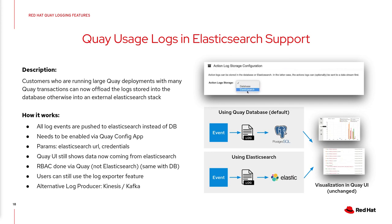Another feature, originally developed for Quay.io, moves audit logs out of the database into an Elasticsearch stack, enabling far better scalability — especially important for large-scale Quay deployments. From an end-user perspective, nothing changes in the UI: you still see the same audit logs, the same information, the same statistics. It's purely a backend change — instead of pushing logs to Postgres, they are pushed to Elasticsearch.